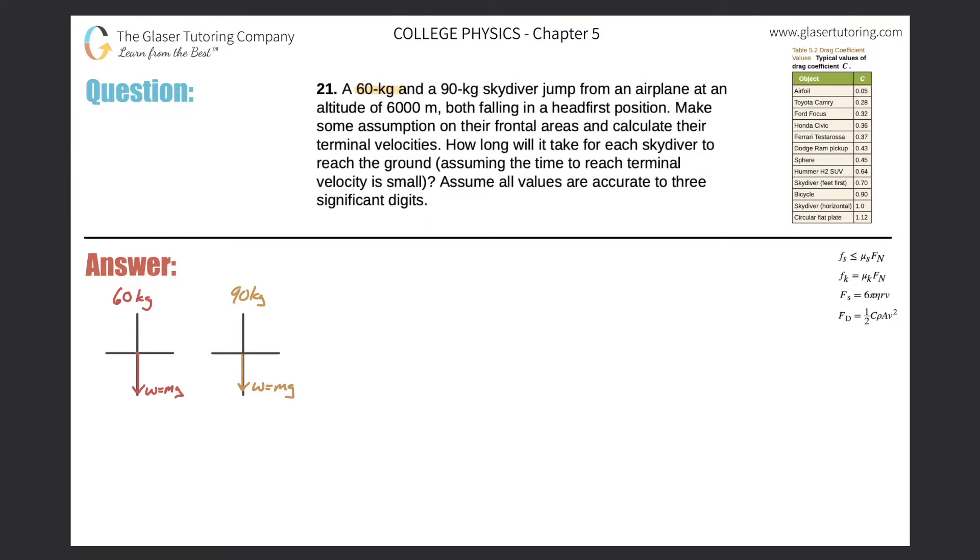Number 21. A 60-kilogram and a 90-kilogram skydiver jump from an airplane at an altitude of 6,000 meters, both falling in a headfirst position. Make some assumption about their frontal areas and calculate their terminal velocities. So let's do that first. I have two pictures detailed here, one for the 60-kilogram person, one for the 90. Basically, if they're skydiving, their weight will be pulling them down towards the Earth.